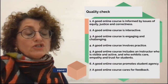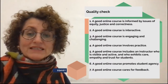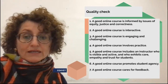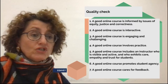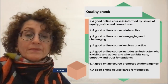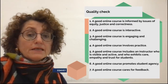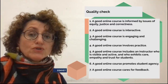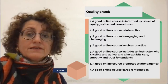We have made a quality checklist with some interesting points. A good online course is informed by issues of equity, justice and correctness. It takes into account social, political and cultural issues, including students' backgrounds and socio-economic circumstances, to craft a learning experience that is just.